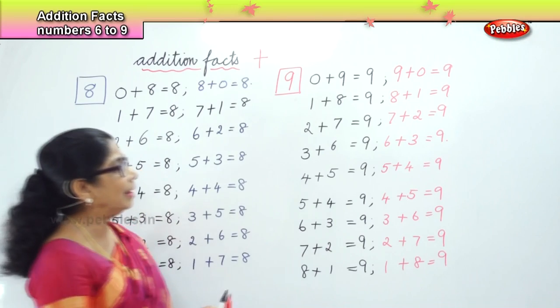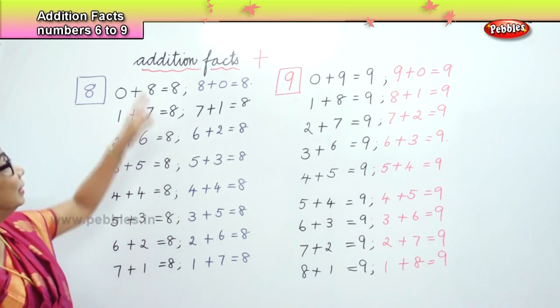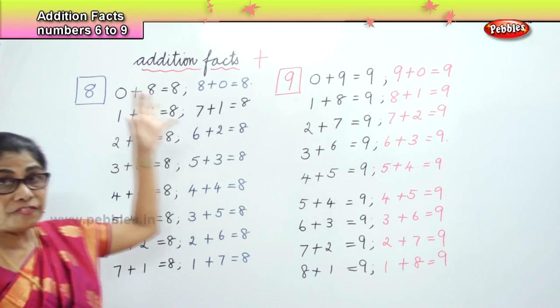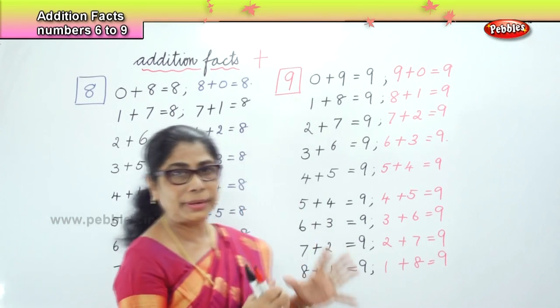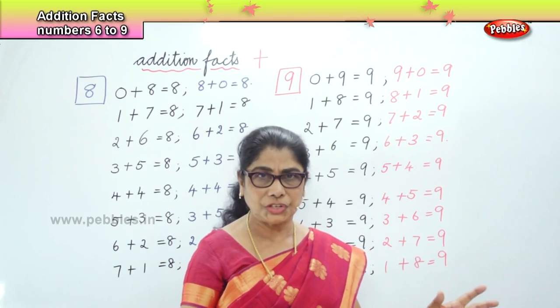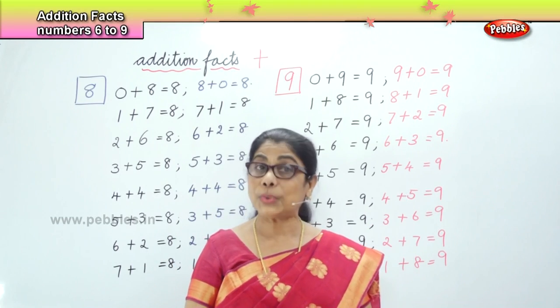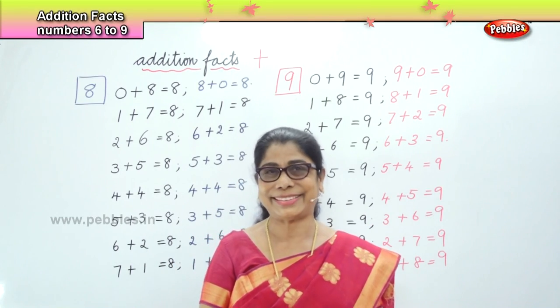Similarly, the reverse: 1 plus 8 is also equal to 9. What have we done here? The addition fact, or the number combination, in simple addition — that's what we learned.